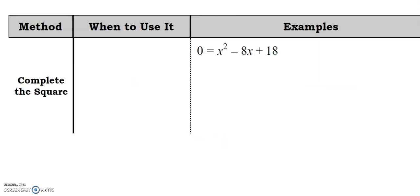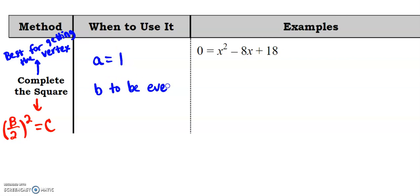Completing the square is next. Okay, when are you going to use completing the square? Now, side note, I just want to point out that the key thing to using completing the square is remembering that b divided by 2 squared is how you get your c value. And I would also like to point out that completing the square is best for finding the vertex, for getting the vertex. But if you do want to use it to solve, here's when you would use it. You want the a value to be one, and you want the b value to be even.